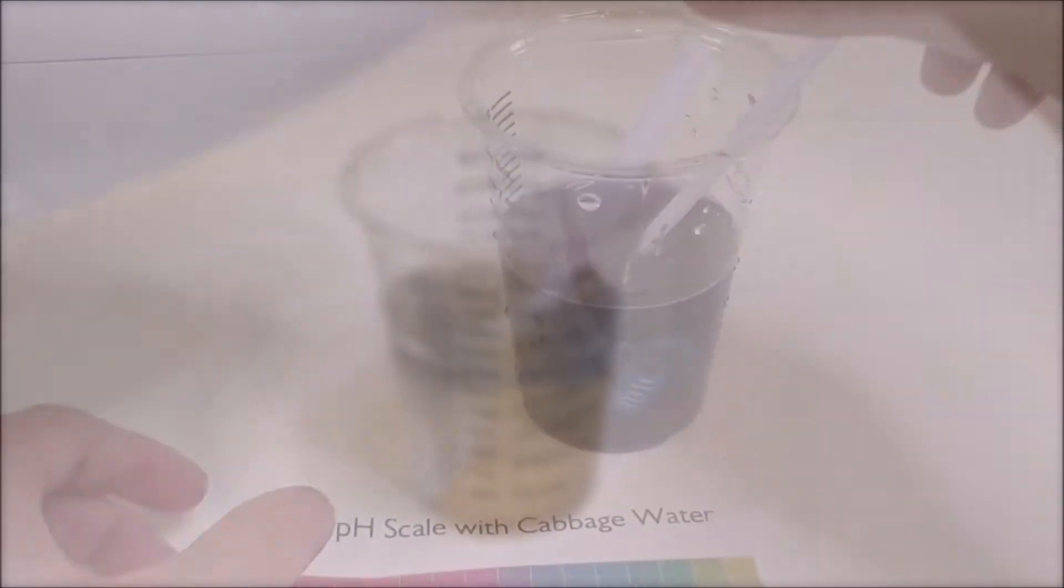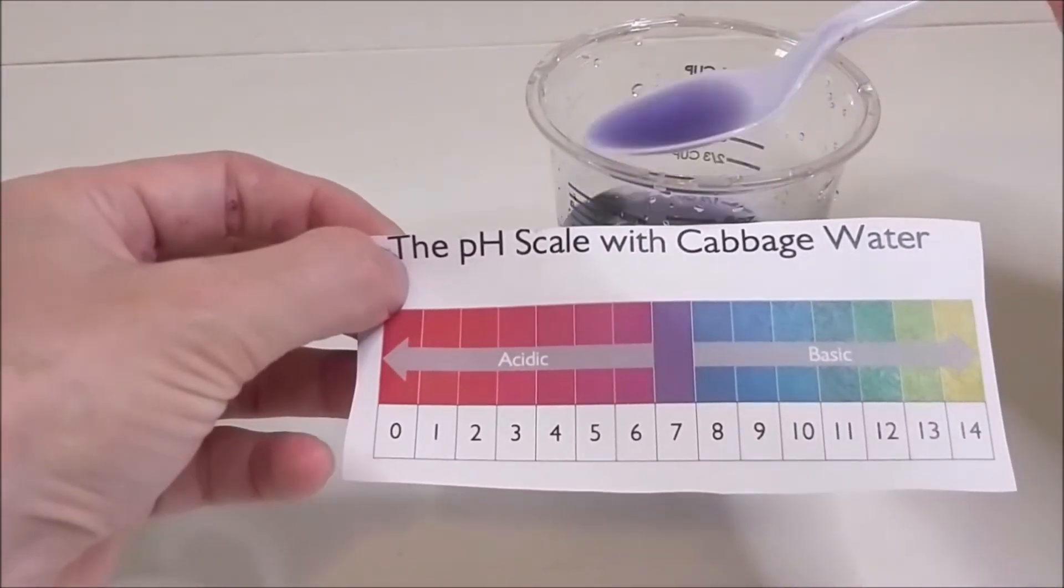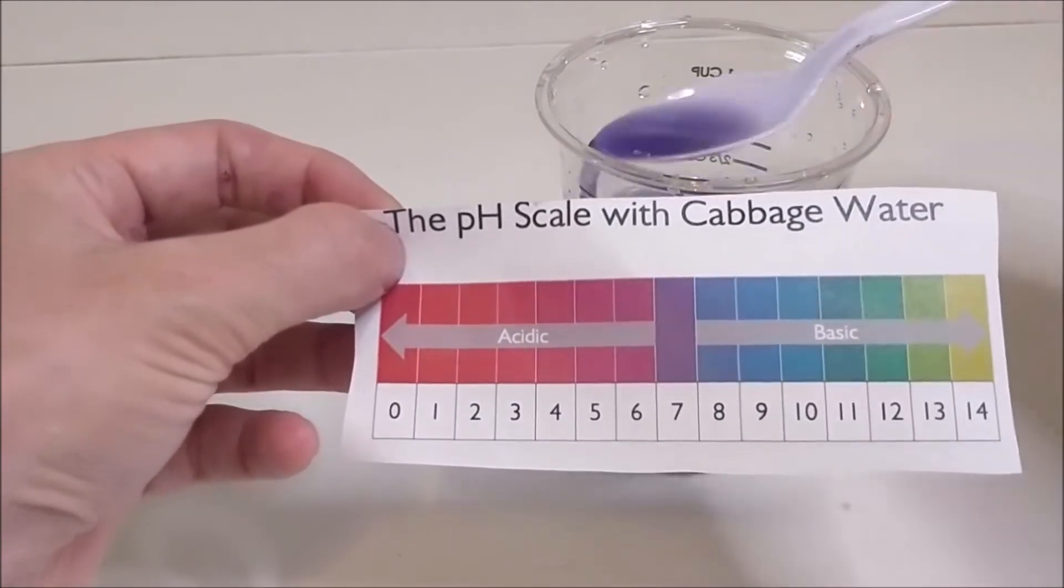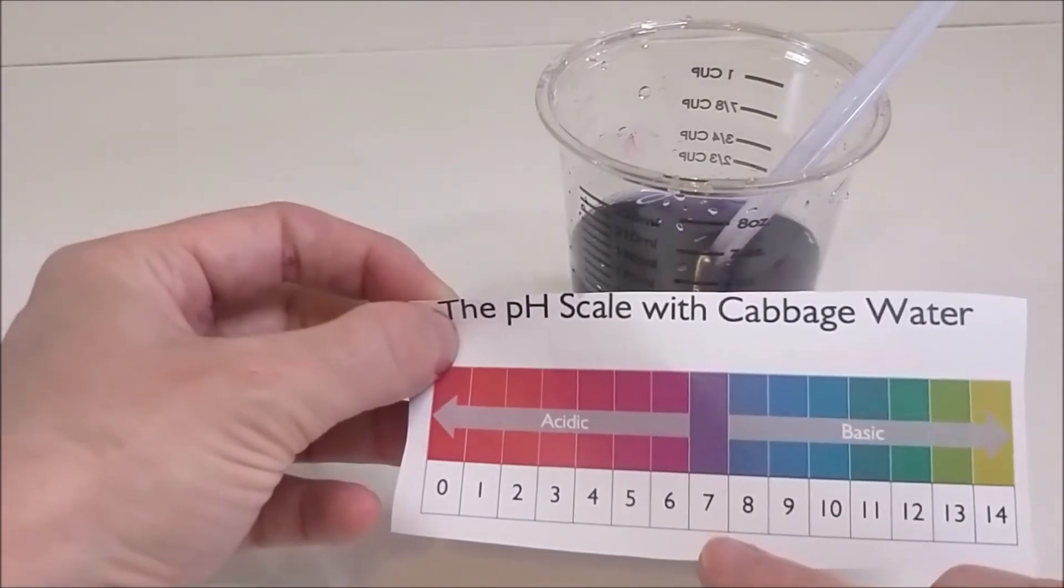Well, what if it's right in the middle? See on the guide, pH 7, this color, this purple color, that's right there in the middle. So pure water would be an example of this. We wouldn't say it's acidic or basic. We would say that it's neutral.